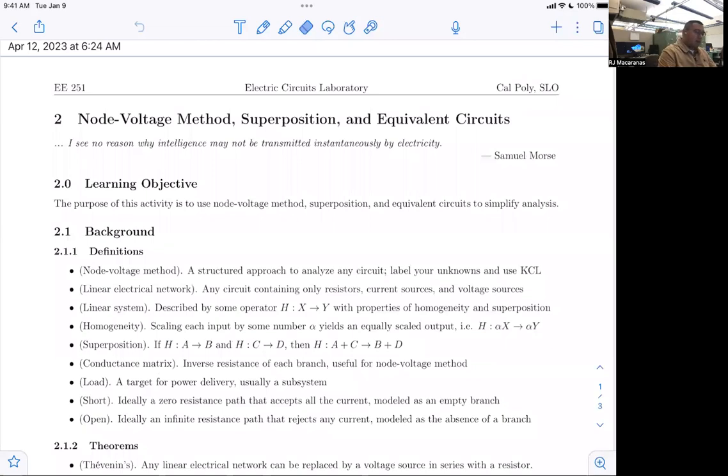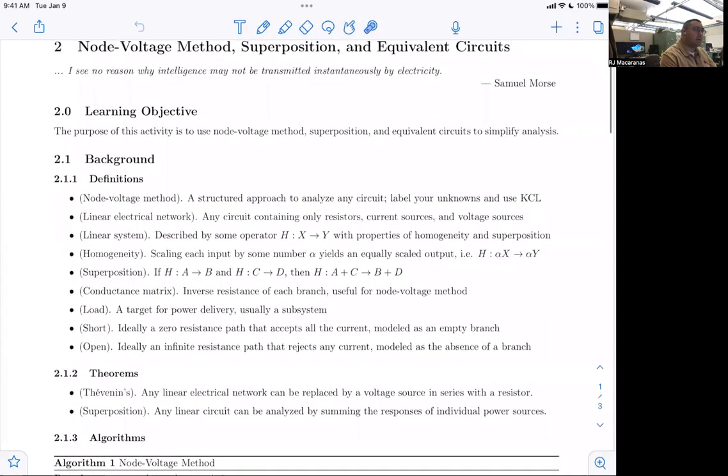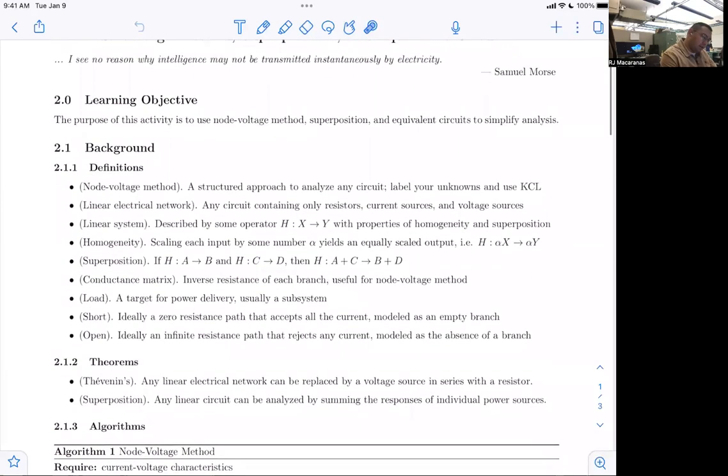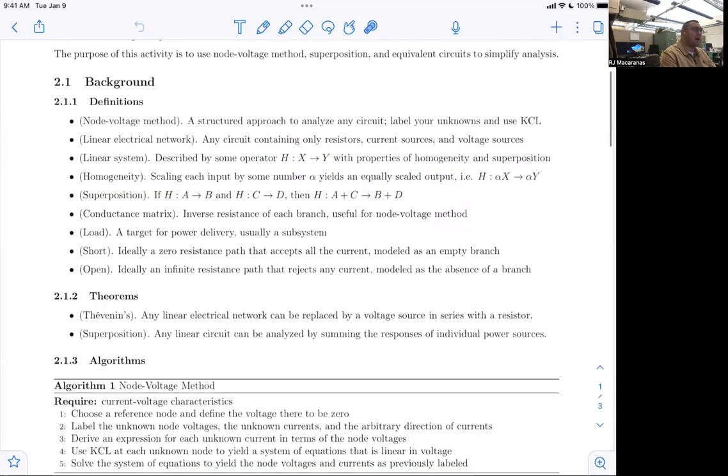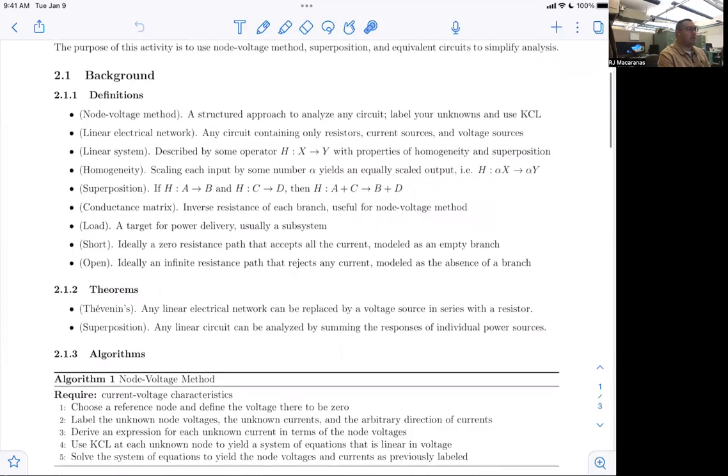So this week, we're going to be looking at node voltage method, superposition method and equivalent circuits, namely just the Thevenin equivalent, if you have heard about that at all. So here are some definitions. I'll let you read through that. Where it might get a little confusing is where I talk about this linear system and this nomenclature might be a little unfamiliar for those who are not formally trained in mathematics. So this says linear system is described by some operator h that maps x to y with properties of homogeneity and superposition. So whenever you see this semicolon and then some letter right arrow and then another letter, it's just a linear map. Well, I guess more of just a map, not necessarily linear.